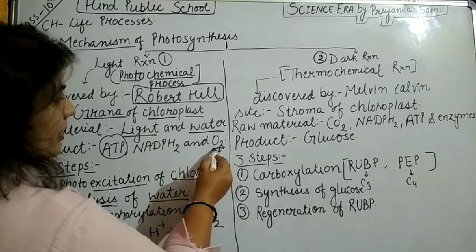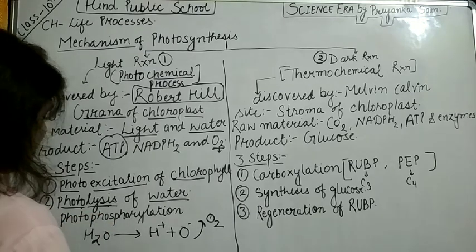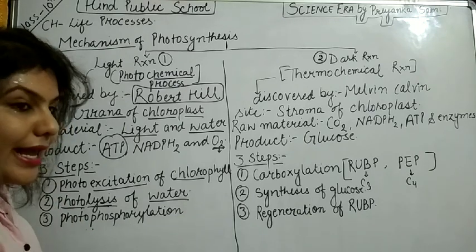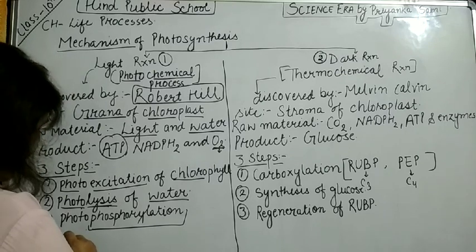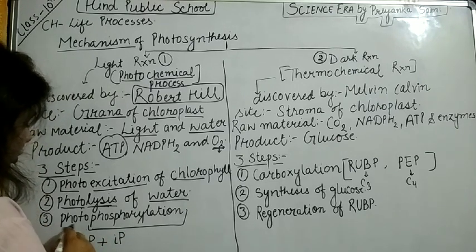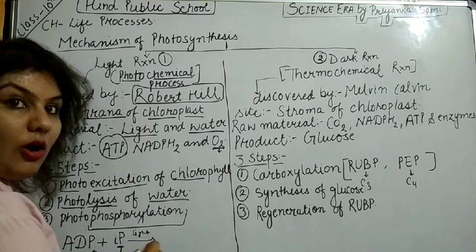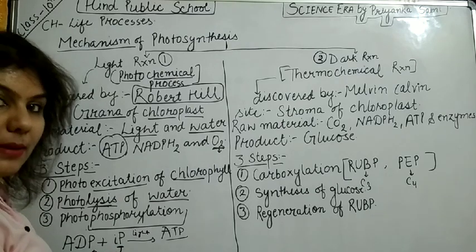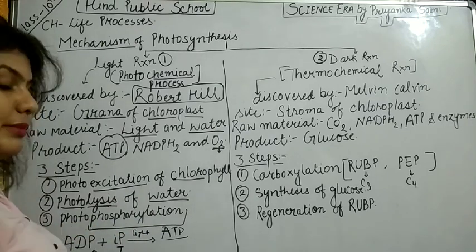This oxygen converts into O2, which is one of our products. The next process is photophosphorylation. Photo means light, and phosphorylation means addition of a phosphate molecule. We have ADP — adenosine diphosphate — and one inorganic phosphate is added to it in the presence of light. When one phosphate is added here in the presence of light, it converts into ATP. This process is called photophosphorylation, meaning a phosphate molecule is added due to sunlight.